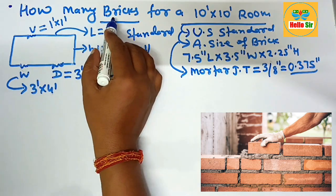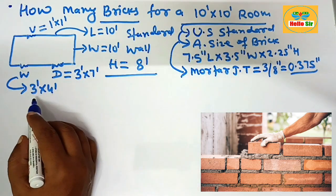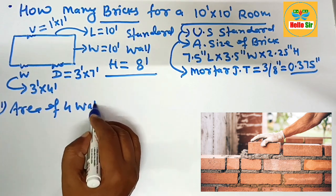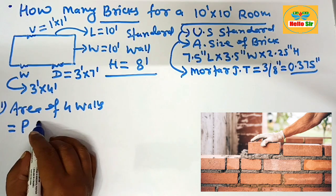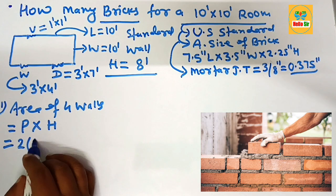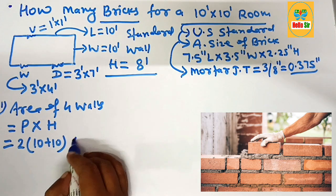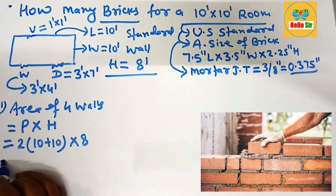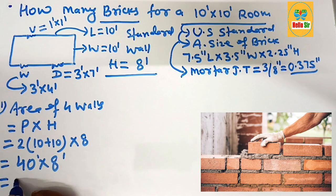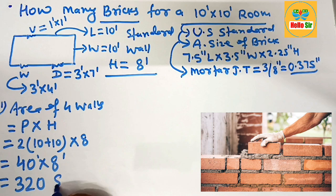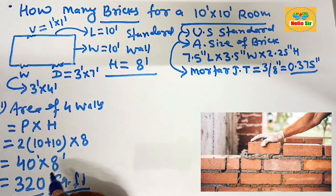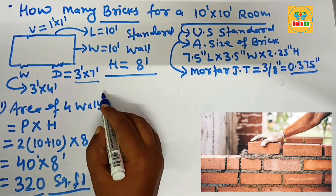First, figure out the area of the 4 walls. The formula is: perimeter of wall multiplied by height of wall. The perimeter is calculated as 2 multiplied by (10 plus 10), then multiplied by the height of 8 foot. That gives 40 multiplied by 8 foot, which comes to 320 square feet. The total area of the 4 walls of this room is 320 square feet.